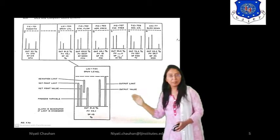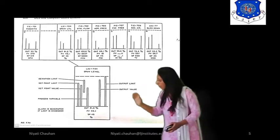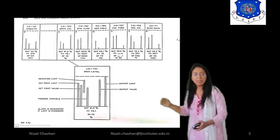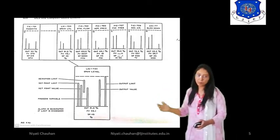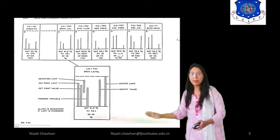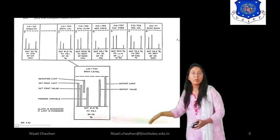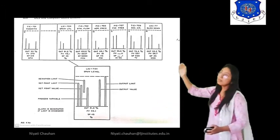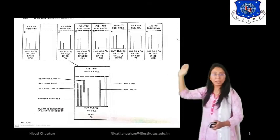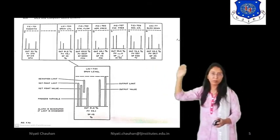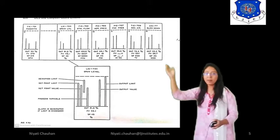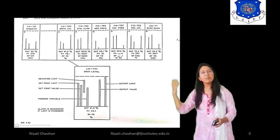Here we have a given example of a Level Indicator and Controller. In the graph, we can see the set point value, set point limit, deviation, output value, and output limit. At the bottom we can see the process value, set point value, and percentage value. This is the group display where we can see all control loops and their values. The group can consist of 8, 12, or 16 loops according to the process variables.